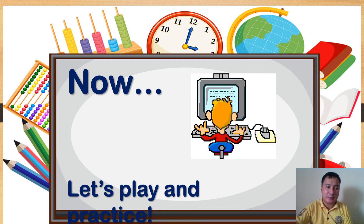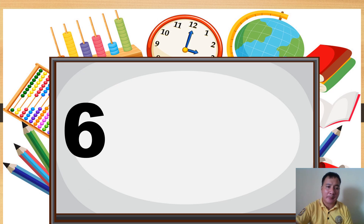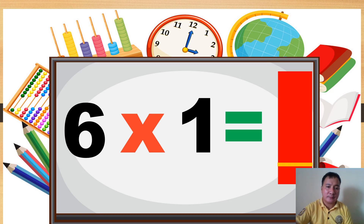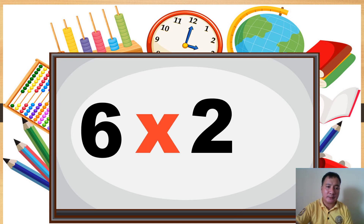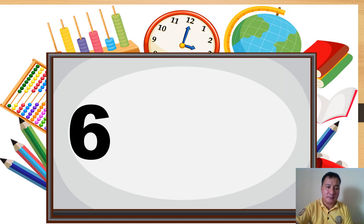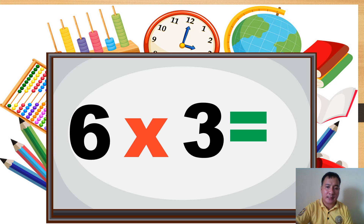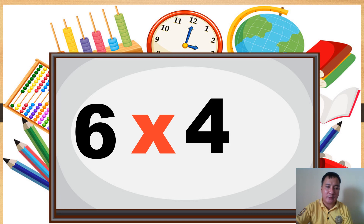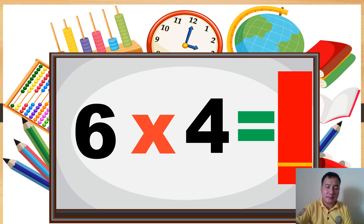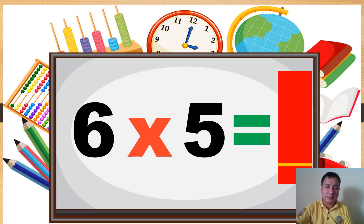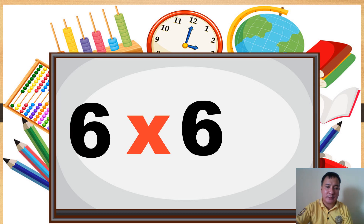Now let's play and practice. Six times one equals... Six times two equals... Six times three equals... Six times four equals... Six times five equals... Six times six equals...